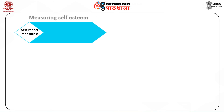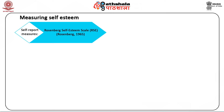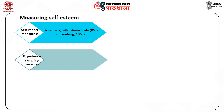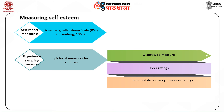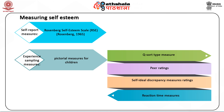The measurement of self-esteem is a long-standing issue in psychology, and researchers have proposed a wide range of self-esteem measures over the years. The vast majority of researchers use self-report measures, of which the Rosenberg Self-Esteem Scale is the most widely used. Apart from self-report measures, other measures include experience sampling measures, pictorial measures for children, Q-sort type measures based on observer judgments, peer ratings, self-ideal discrepancy measures, and reaction time measures.